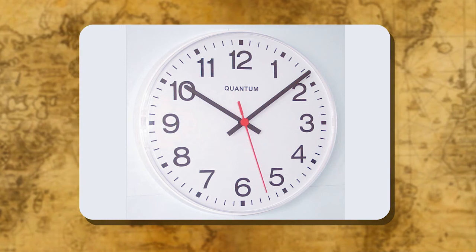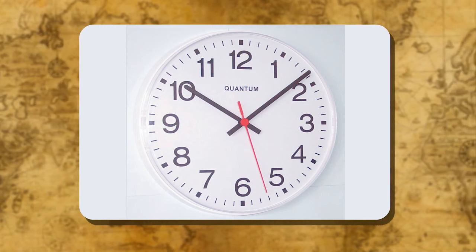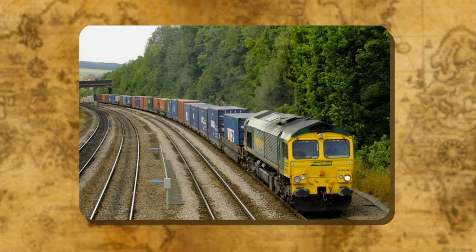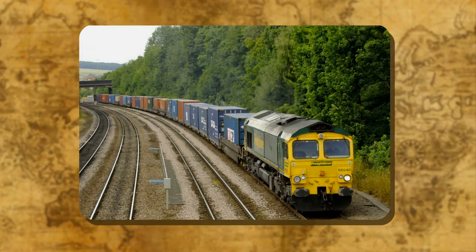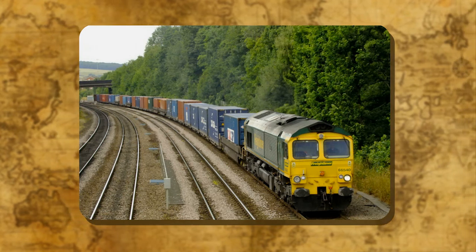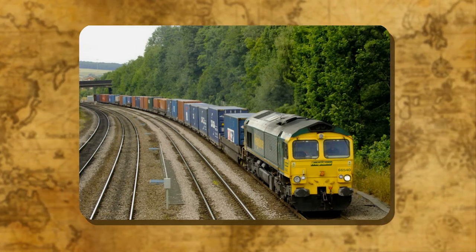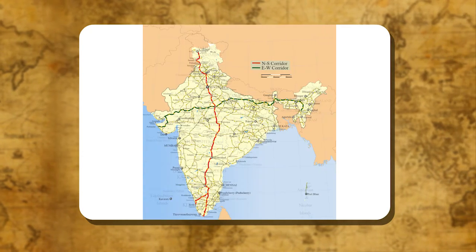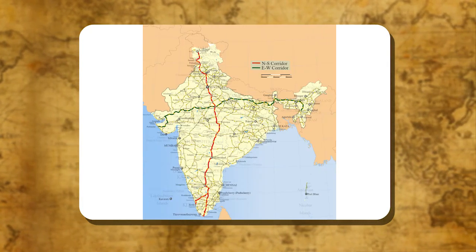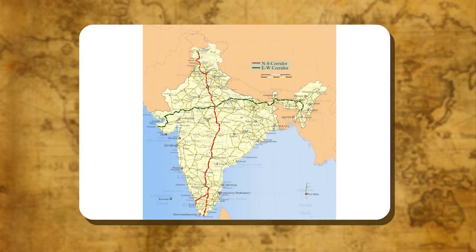For example, it will be difficult to prepare a timetable for trains which cross several longitudes. In India, for instance, there is a difference of about 2 hours between the easternmost point of Arunachal Pradesh and the westernmost point of Gujarat. Therefore, it is necessary to adopt a standard time.